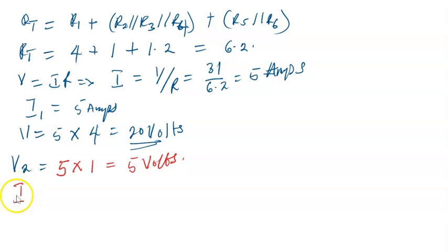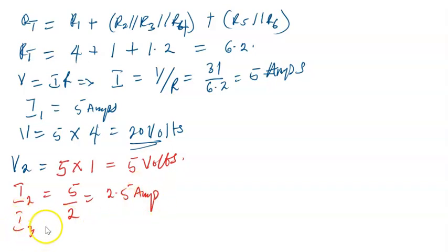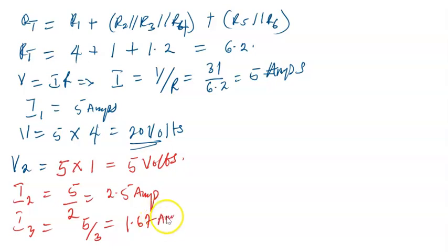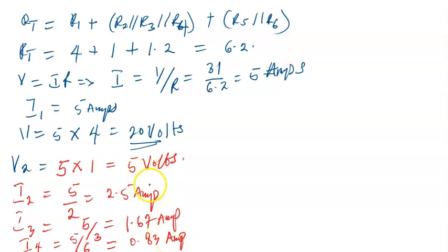Across the 2-ohm resistor: i2 = 5/2 = 2.5 amps. Across the 3-ohm resistor: i3 = 5/3 = 1.67 amps. Across the 6-ohm resistor: i4 = 5/6 = 0.83 amps. One unique thing you will find is that 2.5 + 1.67 + 0.83 — the three currents sum up to i1, which is 5 amps.